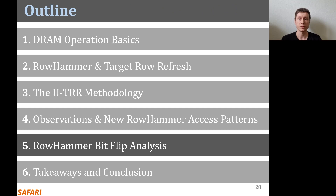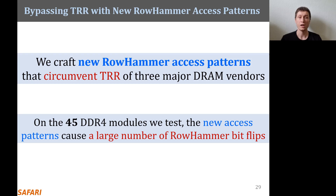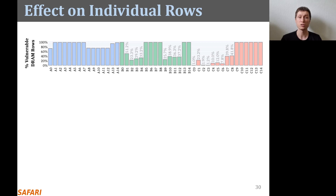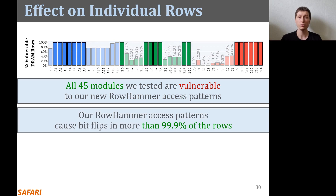Now I will present the RowHammer bit flips that our new access patterns cause. Leveraging the understanding developed using UTRR, we crafted new RowHammer access patterns that circumvent the TRR mechanisms of three major DRAM vendors. We evaluate their effectiveness on 45 DDR4 DRAM modules and find that they cause a large number of RowHammer bit flips. The plot shows, for each of the 45 modules, the fraction of rows that experience at least one RowHammer bit flip compared to all rows in a DRAM bank. We find that all 45 modules are vulnerable, and in 20 of them, our access patterns cause bit flips in almost all rows.